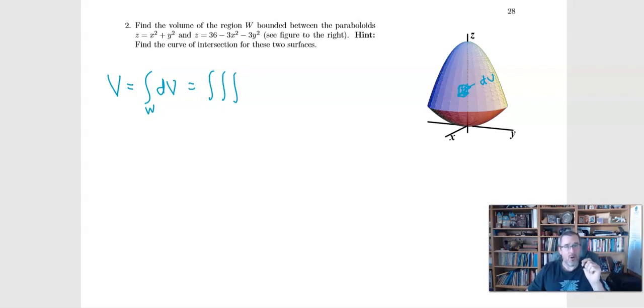with polar coordinates, DA became R DR D theta. Well for very similar reasons, in cylindrical coordinates, DV is going to become R DR D theta DZ.